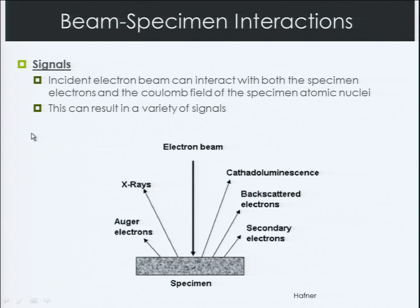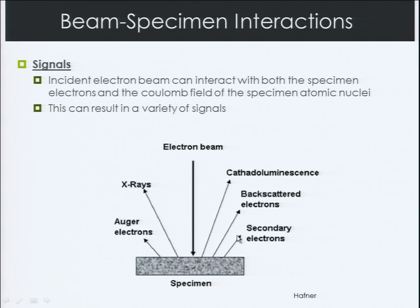Now let's talk about the signals generated from the interaction of your incoming electron beam and your specimen or sample surface. The incident electrons can interact with both the specimen electrons and the Coulomb field of the specimen atomic nuclei. The net result can be many different signals: Auger electrons, X-rays, cathodoluminescence, backscattered electrons, secondary electrons, and a variety of transmitted electrons coming out the other side of the specimen. For today, we'll focus on X-rays a bit, and mostly backscattered and secondary electrons.